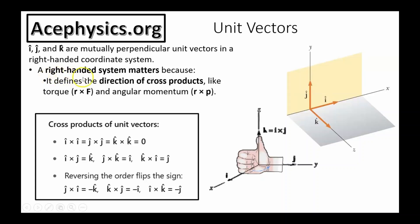Physics uses a right-hand coordinate system to define direction consistently. The cross product of the unit vectors is summarized in this box. For example, I hat cross J hat equals K hat.